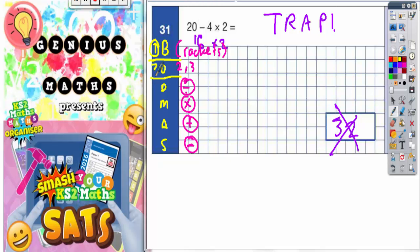Divide and multiply are actually of equal importance, so they are both third on the list.